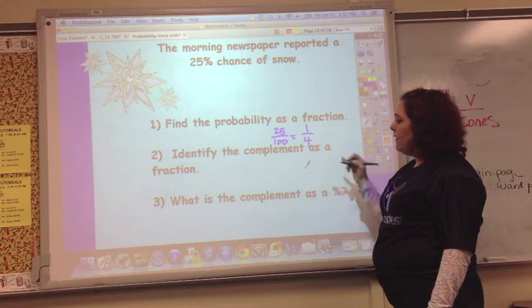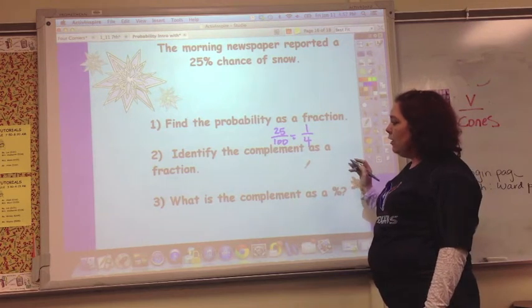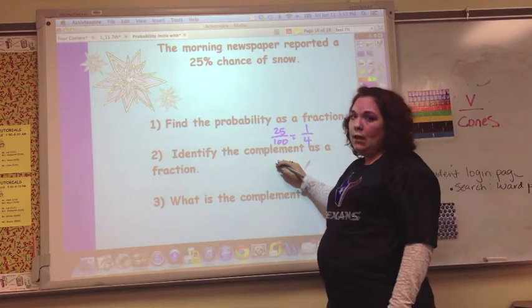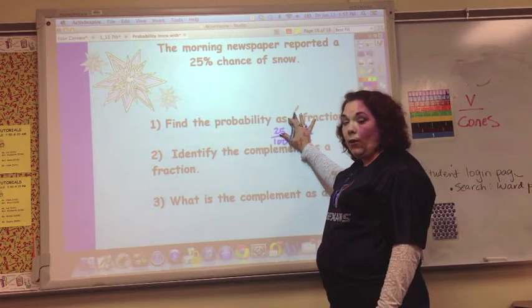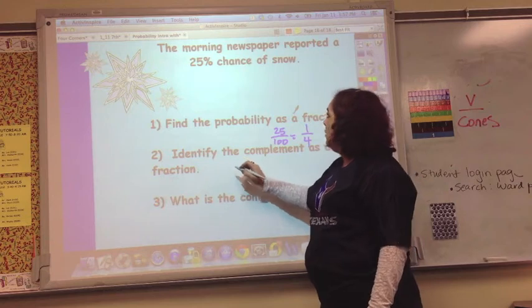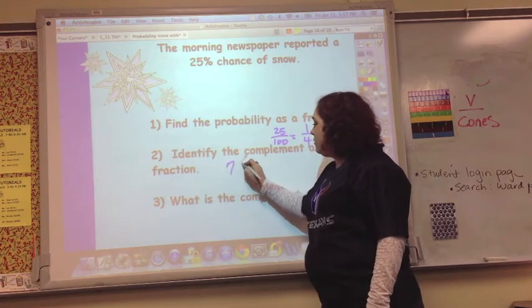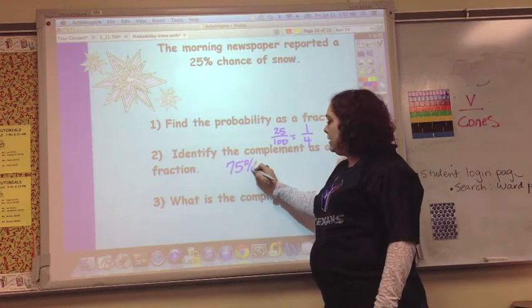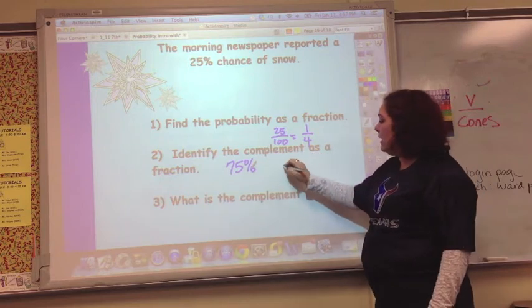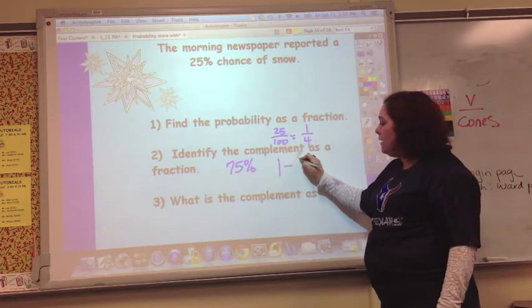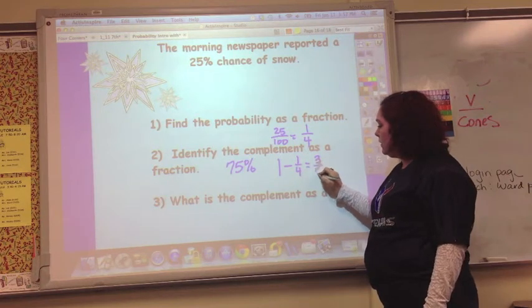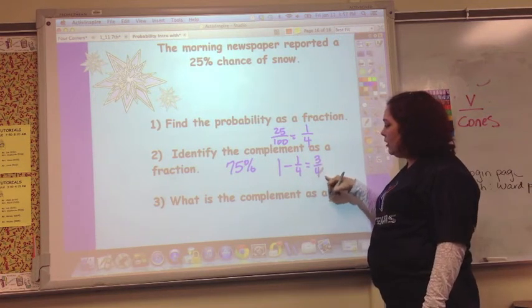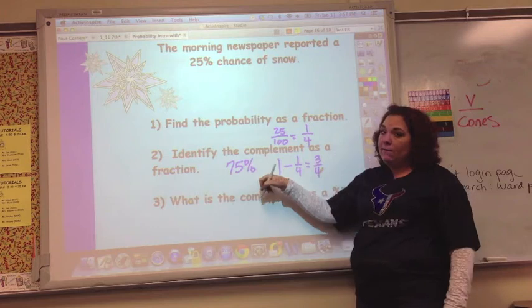And identify the complement as a fraction. Well, the complement, I know if it says 25% chance it's going to snow, 75% chance it's not going to snow, but it says as a fraction. So I can actually take 1 minus one-fourth equals three-fourths. And so as a fraction, it's three-fourths, which is 75%.